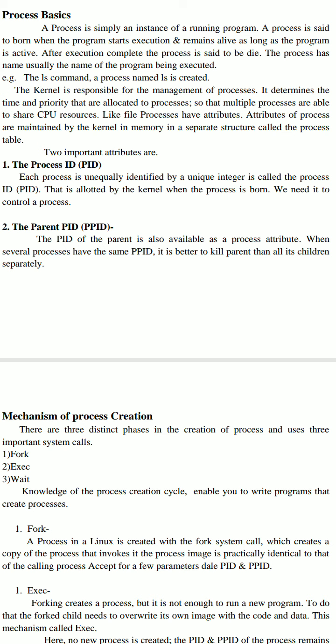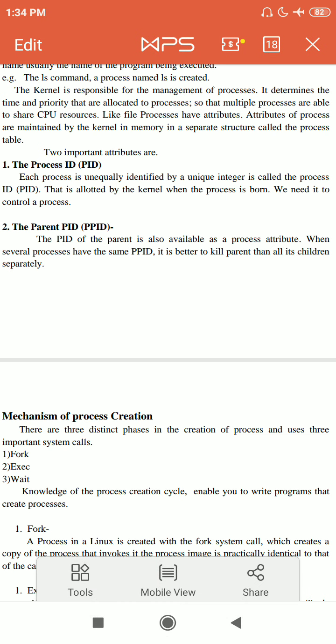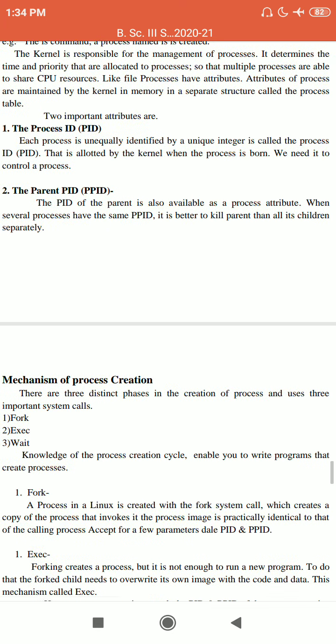Processes have their attributes, and those are maintained in a separate structure maintained by the kernel in memory. That structure is called the process table. The kernel stores and maintains all process attributes in that structure. There are two important attributes: the first one is the Process ID, called PID, and the second is the Parent Process ID.